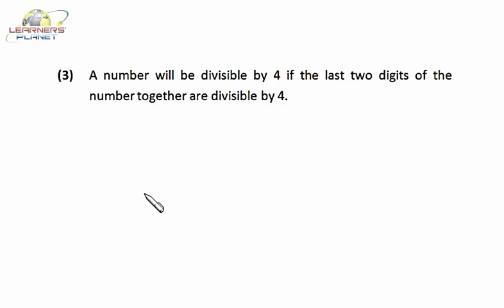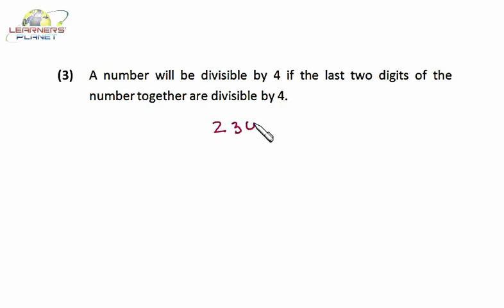Now let's discuss the divisibility rule of 4. A number will be divisible by 4 if the last two digits of the number together are divisible by 4. That means we just have to check the last two digits — it doesn't matter what the size of the number is. Suppose I have the number 234: just check whether 34 is divisible by 4. Since 34 is not divisible by 4, hence 234 will not be divisible by 4.